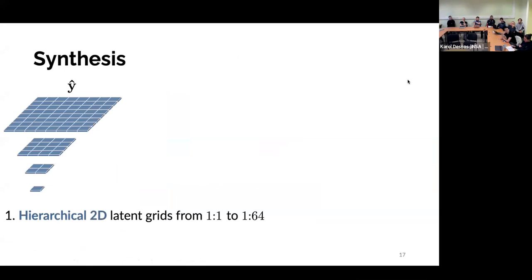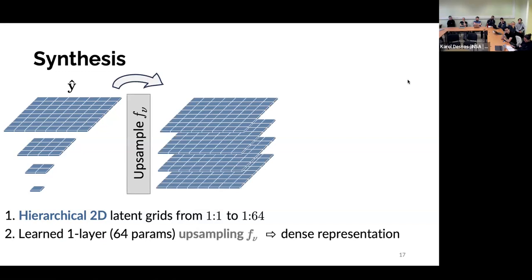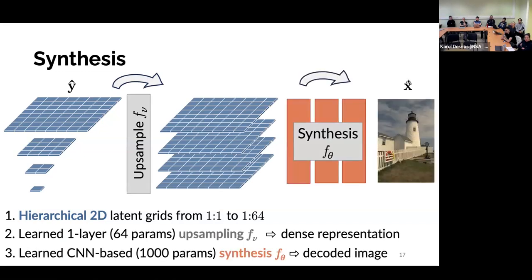So let's just detail a little bit the different components. We'll start with the synthesis, whose role is to go from the latent representation to the decoded image. So the structure of the latent space will be a simple set of hierarchical 2D latent grids. So one full resolution, one half resolution, one fourth resolution, and so on and so forth, until 1/64 of the resolution. These latent grids will first be up-sampled with a very tiny neural network with 64 parameters to obtain a dense representation. So seven feature maps with the same resolution as the image. And these seven feature maps will be fed to a learned CNN-based synthesis with a very few number of parameters, usually a few hundred, one thousand at worst. And this does the mapping between the latent space and the decoded image.